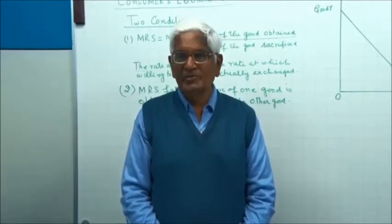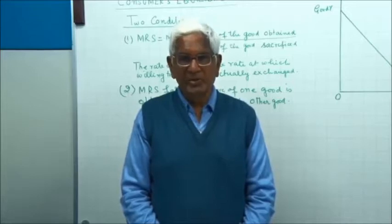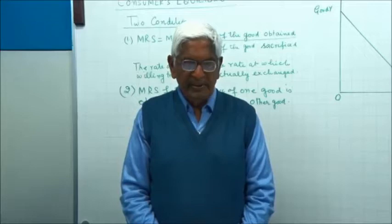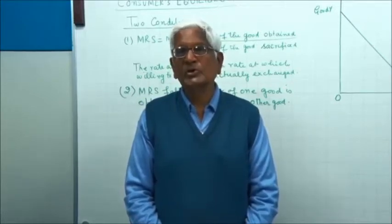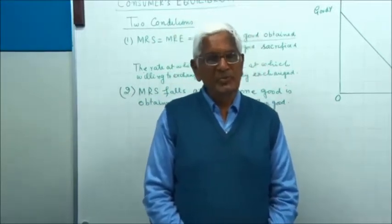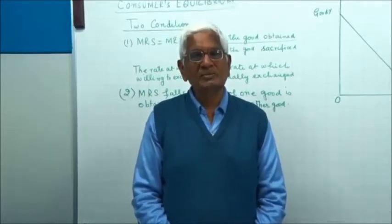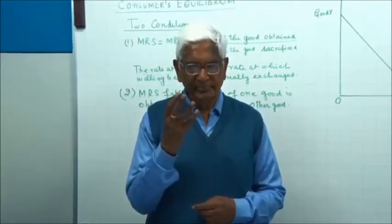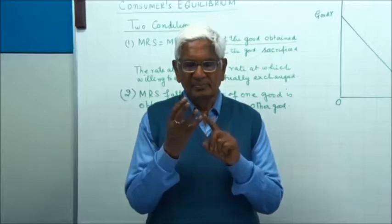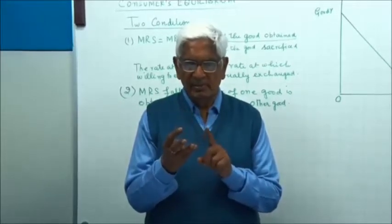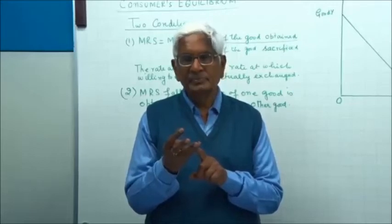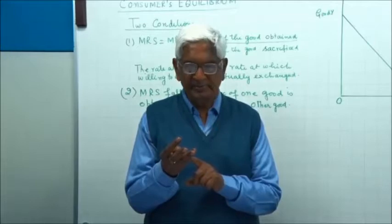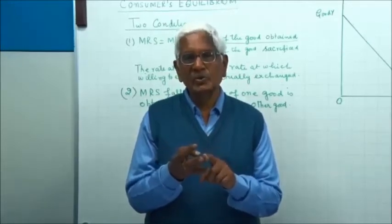Third, marginal rate of substitution is continuously falling. We have already explained why it falls. Fourth assumption is preferences are monotonic, which means more goods means more satisfaction. So we have four assumptions: utility is ordinal, consumer is rational, marginal rate of substitution is continuously falling, and preferences are monotonic.